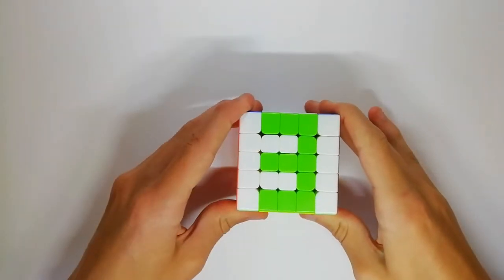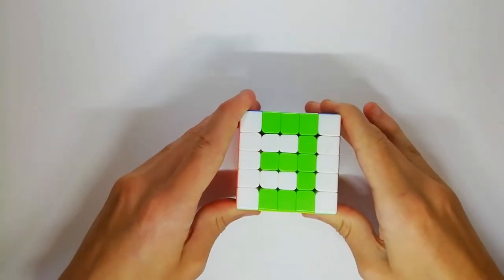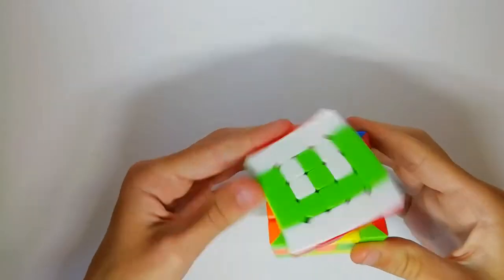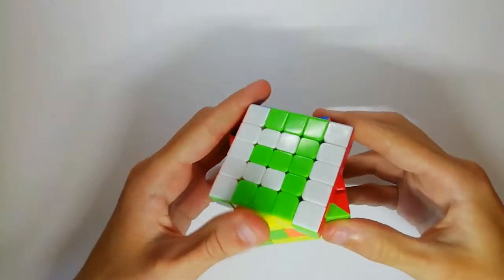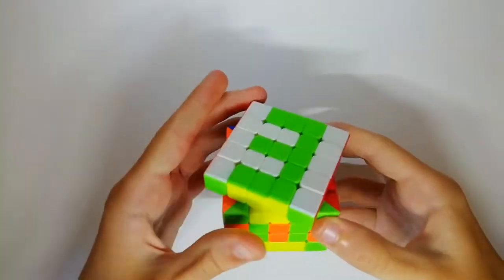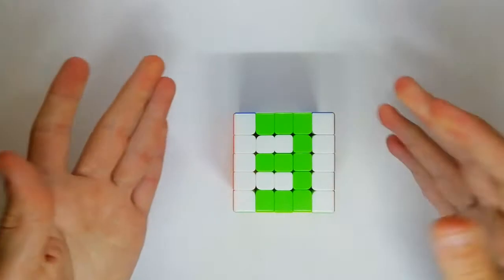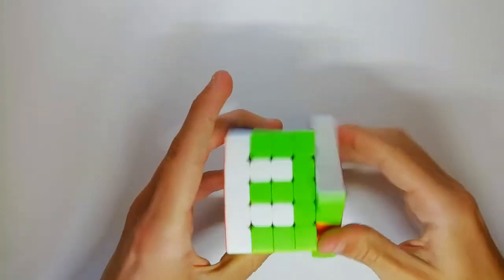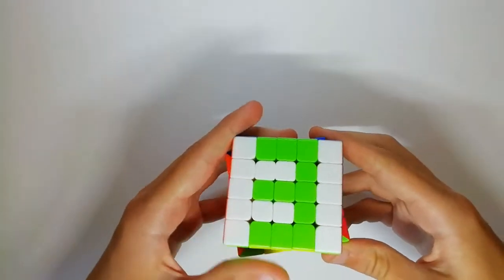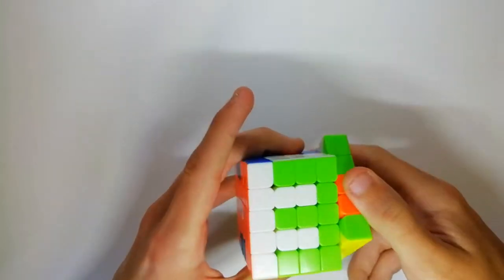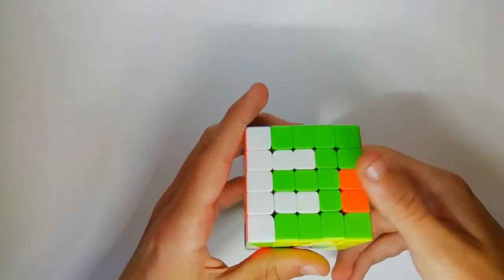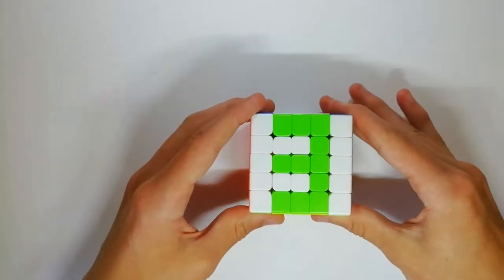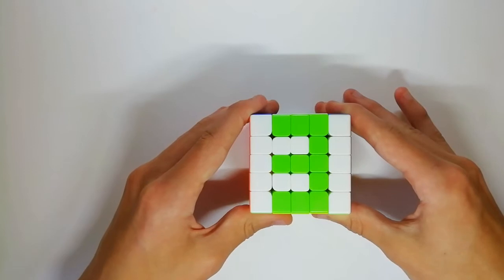In 3rd place we have the YJMGC 5x5M. It's only £14 and it basically is somewhat of a Valk 5 feel but it retains stability in a weird way, slightly bumpy feeling but you can hear it's quite different in sound. But it still feels really nice.